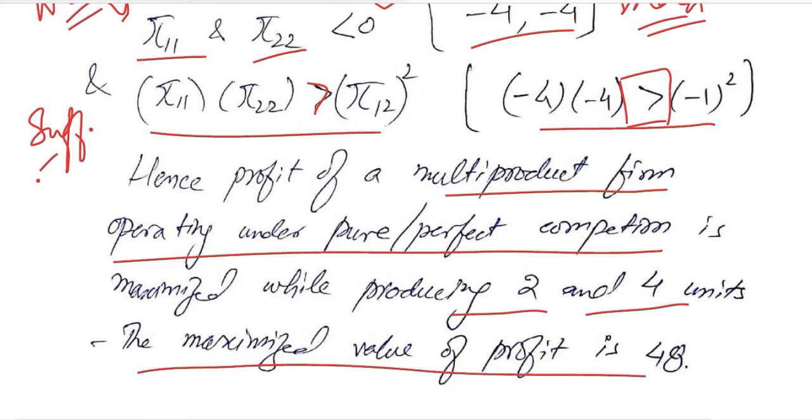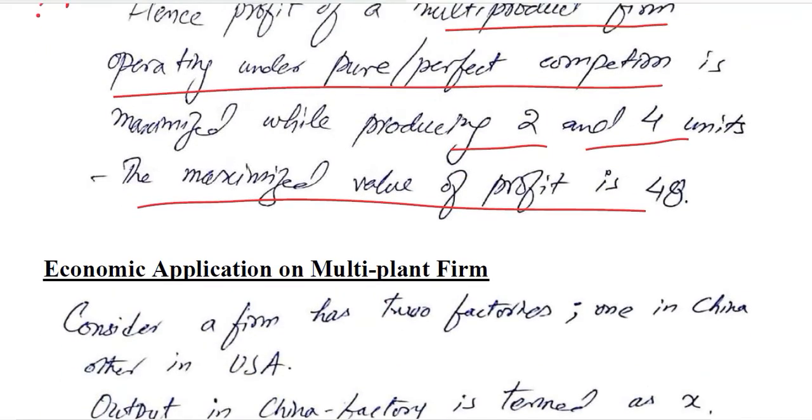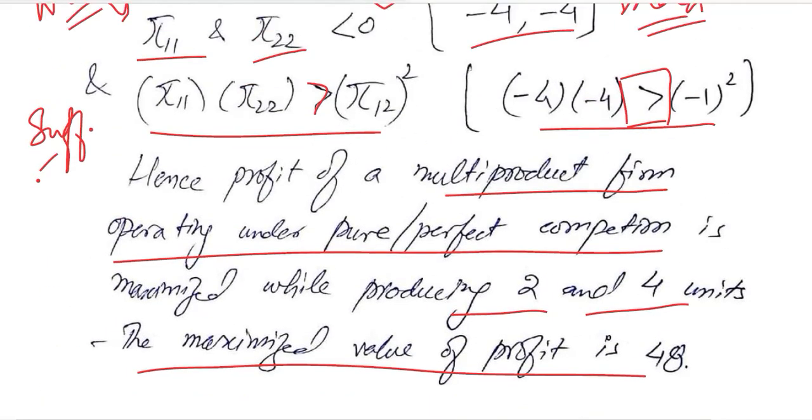The maximized value of the profit is 48. This 48 can be found simply by putting the values of Q₁* and Q₂* in the profit function, and then we will get the value of the maximized profit, 48.